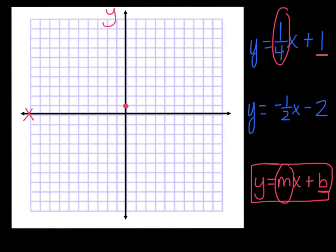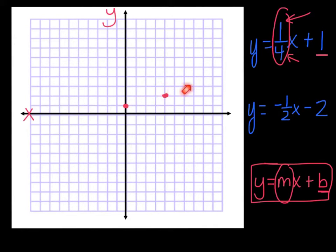So with slope one-fourth, I have to go up one over four. I'm going to go up one, over one, two, three, four — there's my first point. I'll go up one over four again — up one, over one, two, three, four — there's my next point.